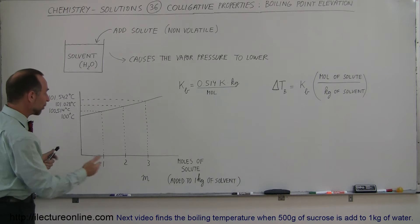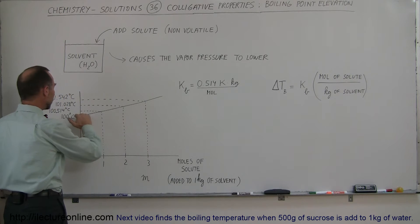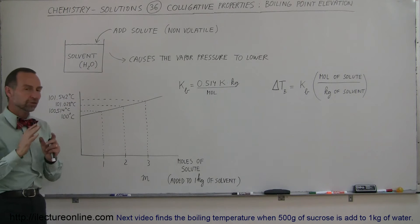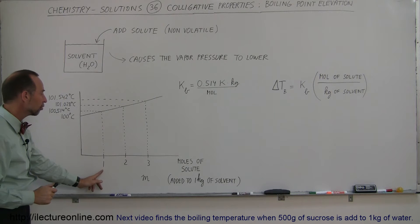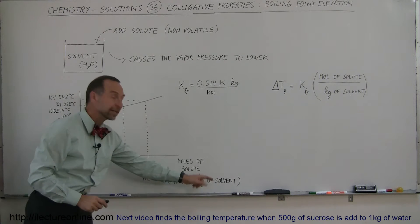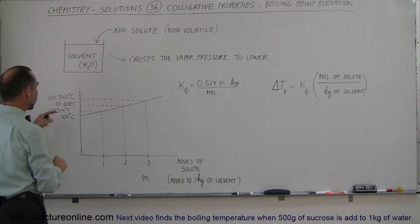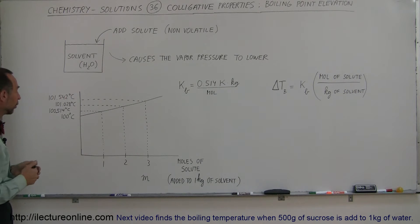Here I have a chart that shows as you're adding more and more solute to the solution, the boiling point keeps going up. There's a slope to this line. If you add one additional mole of solute to one kilogram of solvent, in this case water, the boiling point will go up by about 0.5 degrees centigrade, 0.514 to be exact, or 0.514 Kelvin.